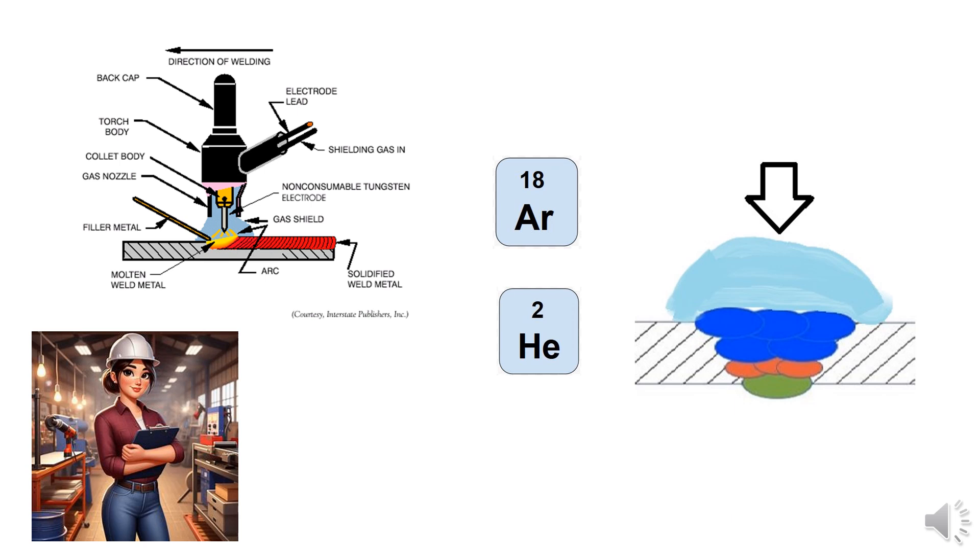A direct current welding circuit can operate with either straight polarity or reverse polarity. Straight polarity, DCSP: Electrons flow from the electrode to the workpiece, focusing most of the heat on the base metal. This method is preferred for GTAW because it enables higher-quality welds, reduces base metal distortion, and speeds up the welding process.